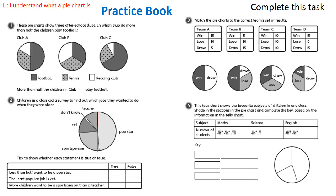Then question four. This tally chart shows the favorite subjects of children in one class. Shade in the sections of the pie and complete the key based on the information on the tally chart. So what we're going to need to do is we're going to need to do some completing. We have to think about the different subjects and where we're going to write them. So let's make this one maths, and maybe you want to make the maths section dotty.